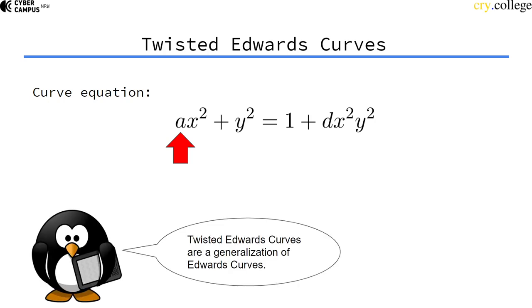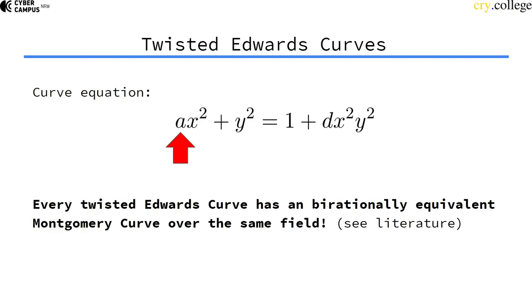Twisted Edwards curves are actually a generalization of Edwards curves. What that means is that every twisted Edwards curve has a birationally equivalent Montgomery curve over the same field, so we can actually rewrite every Montgomery curve.